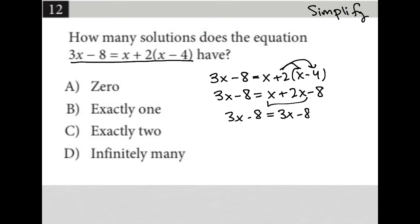When does that happen? That happens always. This is always true, no matter what the x value is. Therefore, this is infinitely many. There are infinitely many solutions because x can be anything. No matter what x is, we will always get that 3x minus 8 equals 3x minus 8.